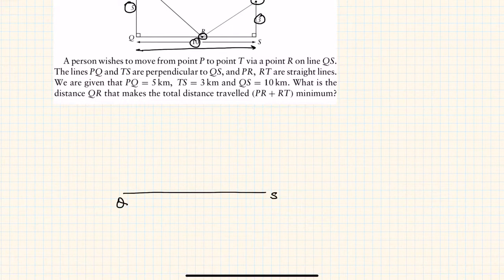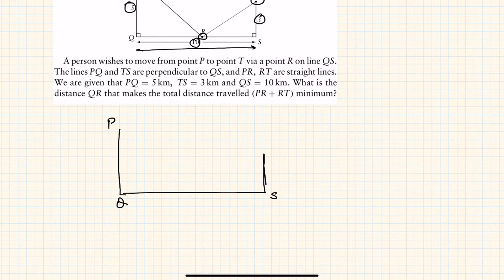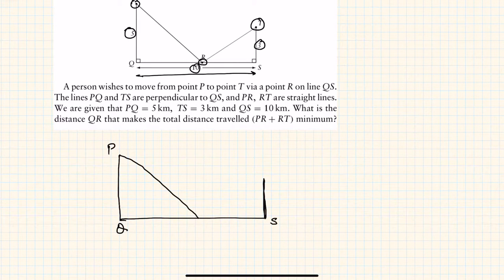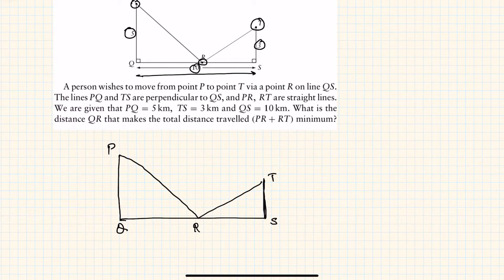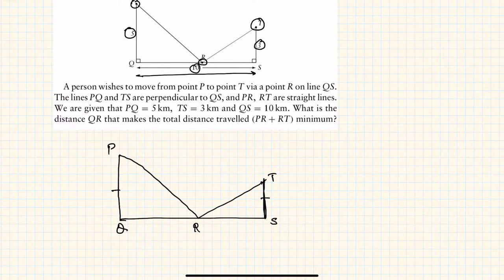Many of you might have thought that point R is exactly the midpoint of QS — you joined them and found PR and RT using the Pythagorean theorem. But that will not be the right solution. R would be the midpoint only if PQ and TS were the same length. Since they are different, R will not be the midpoint.